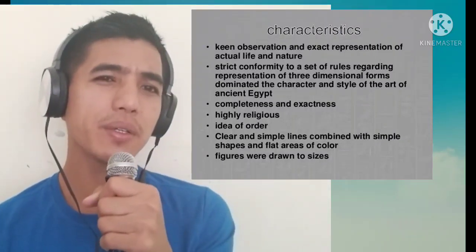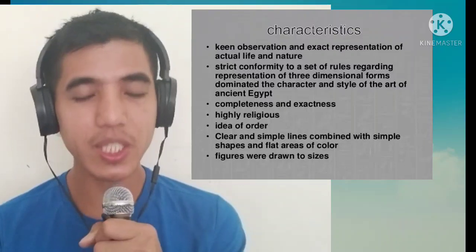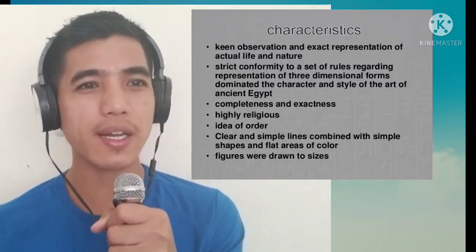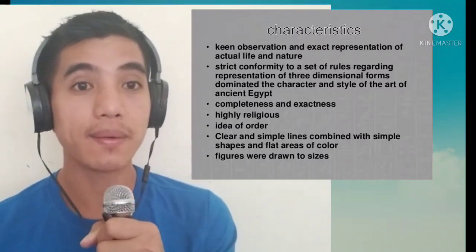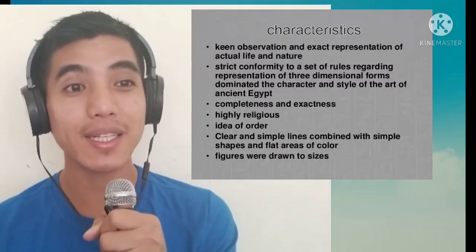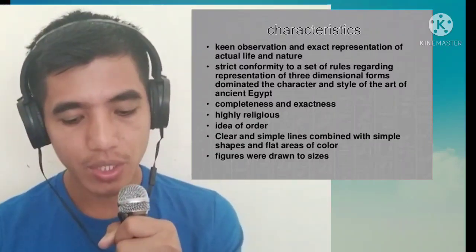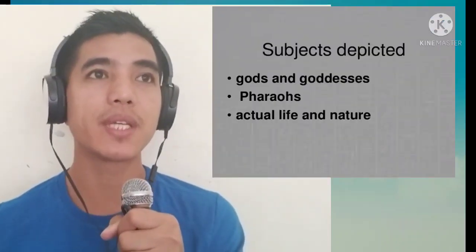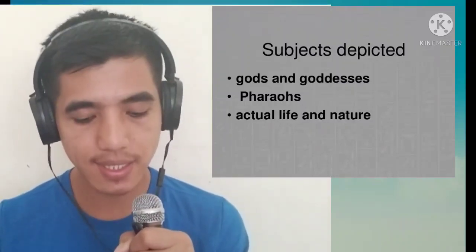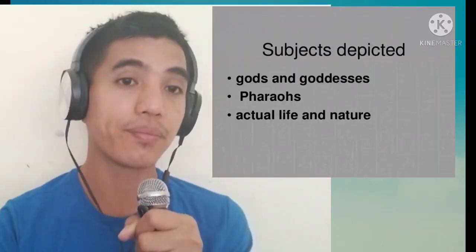These characteristics are very visible in Egyptian works, most especially in religious subjects. When we make modern artworks, we also need to observe characteristics because it's important to give good character to our products. The subjects we're going to learn in Egyptian art are: first, gods and goddesses; second, the pharaohs; and third, actual life and nature.